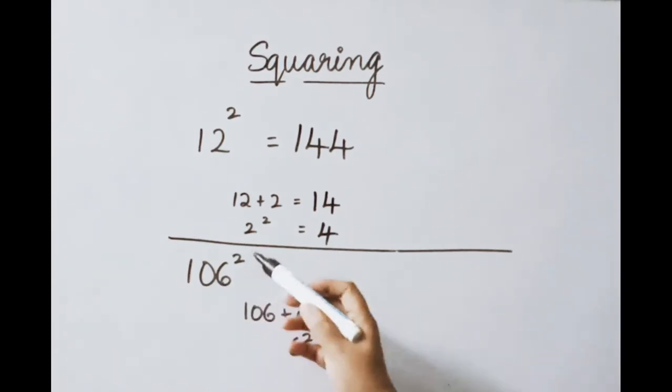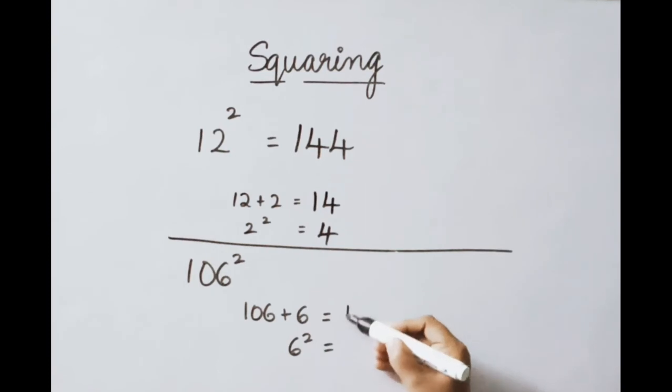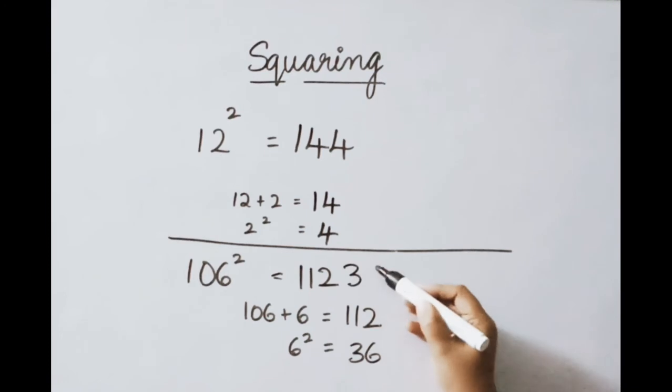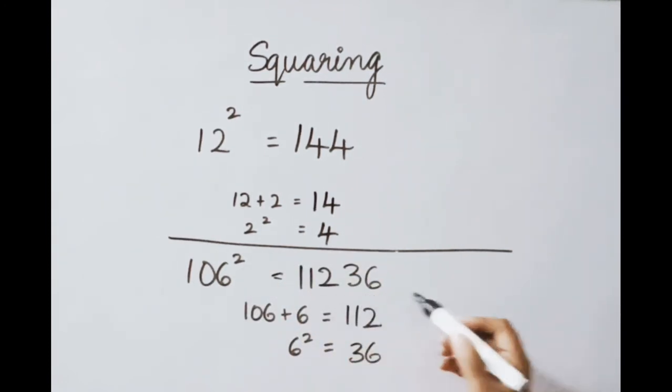See now 106 square. 106 units place value you add. 106 plus 6 how much? 112. So that is the first part answer. Next, unit place value square. 6 square means 36. This is the second part answer. Therefore, 106 square means 11236.